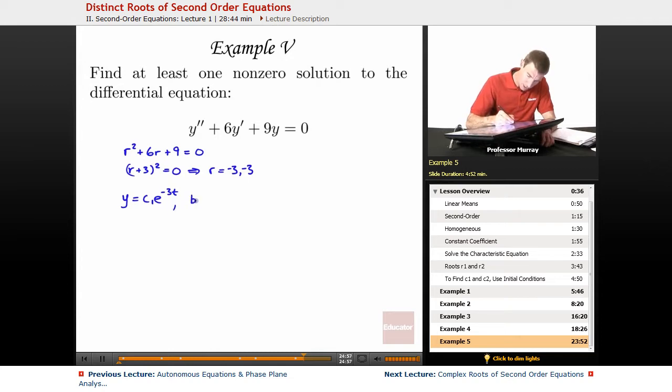So let me write that down. But we can't find a second solution that is independent of our first solution, which was e to the negative 3t.